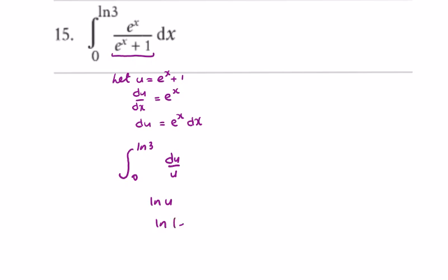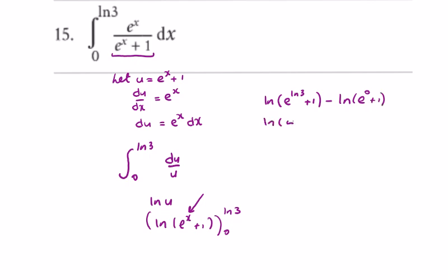This gives the natural log of u, which gives the natural log of e to the power of x plus 1, evaluated between ln 3 and 0. Putting in ln 3 for x, we have the natural log of e to the power of ln 3, which equals 3, so that gives 3 plus 1. Minus putting 0 in for x, the natural log of e to the power of 0 plus 1, which is the natural log of 2. So we get the natural log of 4 over 2, which equals the natural log of 2.